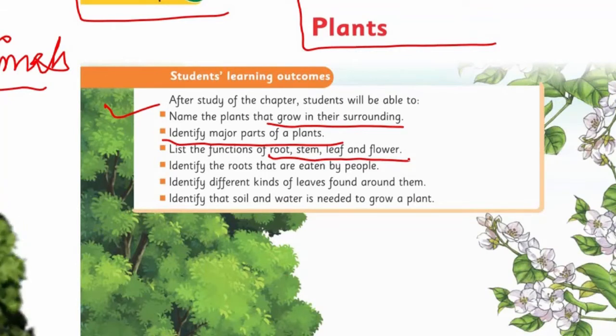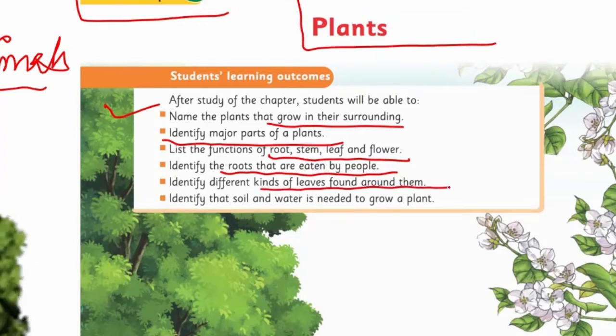And after that, identify the roots that are eaten by people. Some roots, meaning the roots of some plants, are being eaten by us, so we will learn that. Identify the different kinds of leaves found around them. You can see roots and leaves, you can see how different types of leaves can be found on them. Different types of leaves are found.